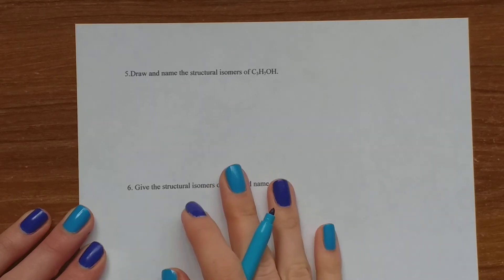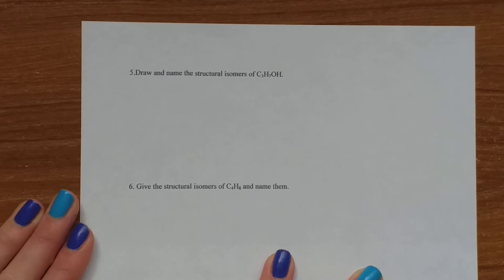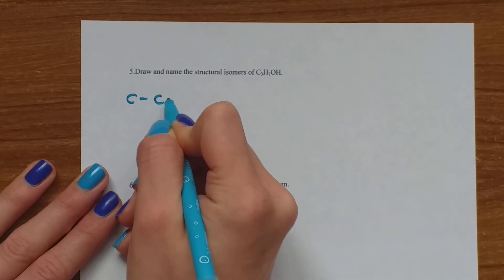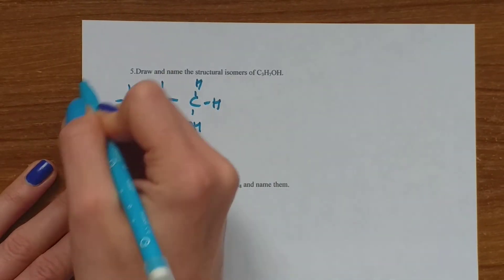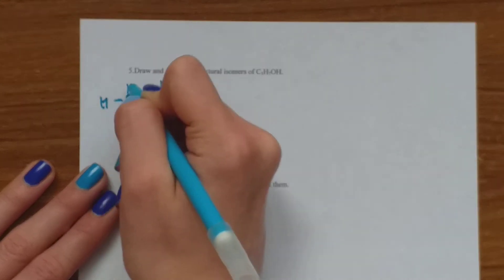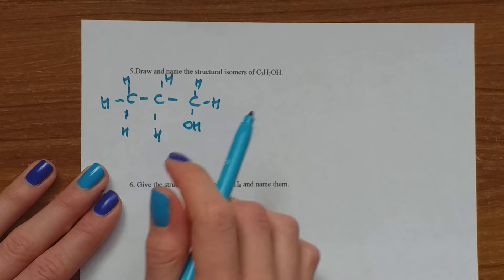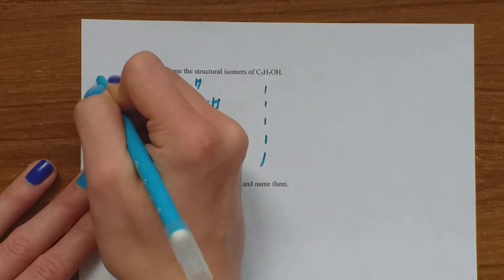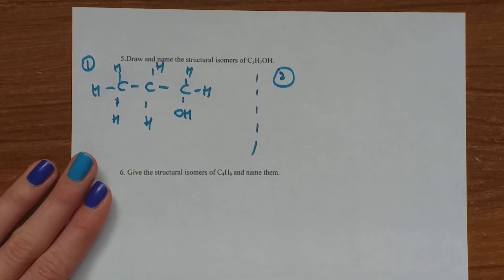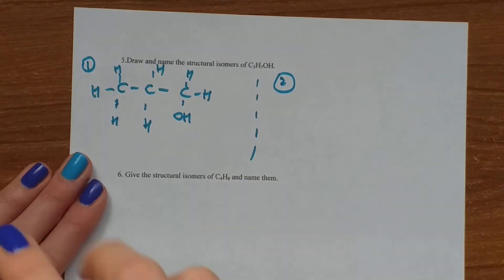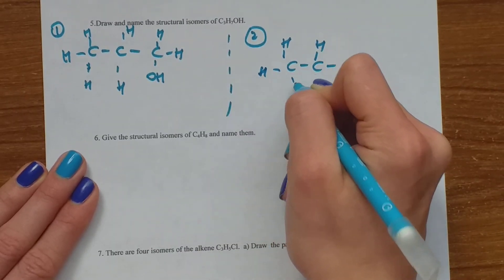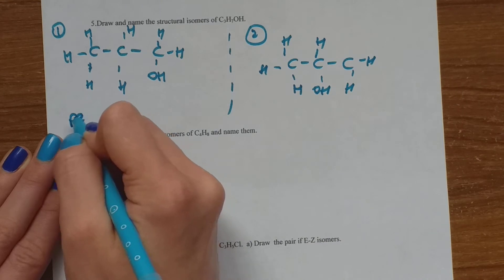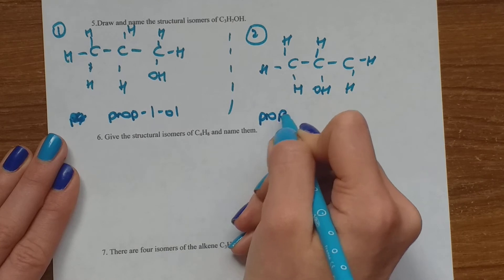Now we've got our drawing questions. We're asked to draw and name the structural isomers of C3H7OH. First of all, just draw the formula — three carbons, one OH. You can draw the OH on the first carbon and then draw the rest of the hydrogens. So you've got the OH on the first carbon, and the rest drawn — this is prop-1-ol. The next isomer you can draw is moving the OH group to the middle carbon — this is prop-2-ol.